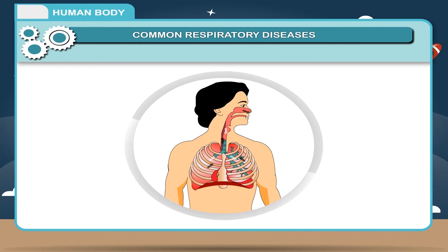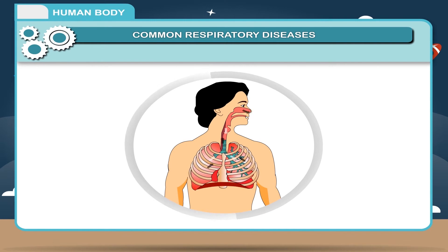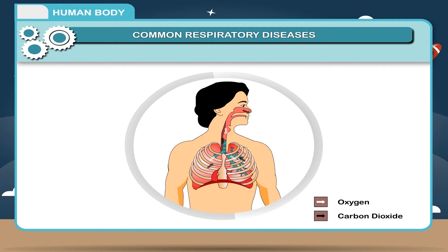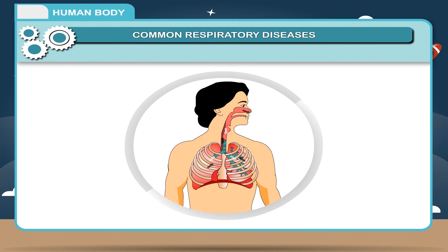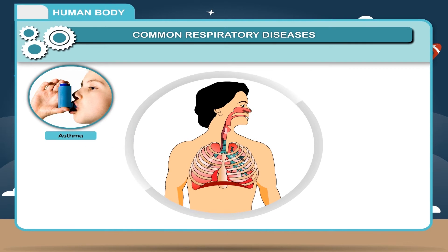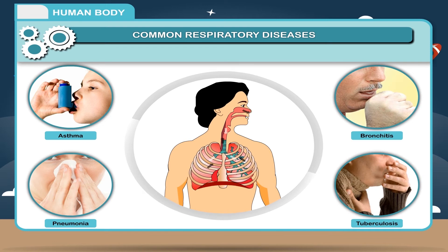The lungs are the part of our respiratory system that expand and contract thousands of times each day to bring in oxygen and expel carbon dioxide. Lung diseases can result in problems in any part of this system. Some common respiratory diseases are asthma, bronchitis, pneumonia, and tuberculosis.